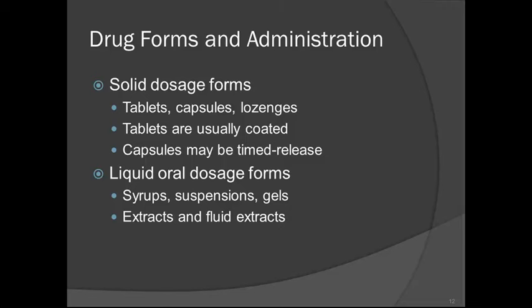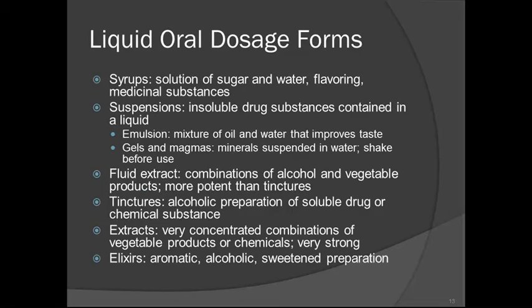Liquid oral dosage forms include syrup suspensions, gels, extracts, and fluid extracts. Syrups are solutions of sugar and water with flavoring and medicinal substances. Suspensions are insoluble drug substances contained in a liquid, which may include emulsions — a mixture of oil and water that improves taste. Gels and magmas are minerals suspended in water; shake these before use. Fluid extracts combine alcohol and vegetable products and are more potent than tinctures. Tinctures are alcohol preparations of soluble drugs. Extracts are very concentrated combinations of vegetable products or chemicals and are very strong.